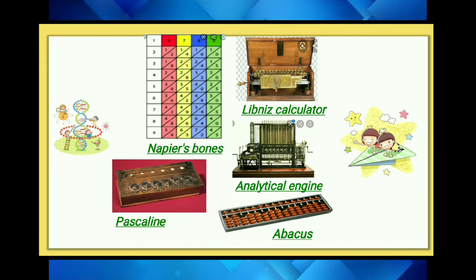As you can see the different pictures: the Abacus for doing calculations, Napier's Bones for doing multiplication, addition, and division, then the Pascaline used for different types of mathematical calculations, then the Leibniz calculator with further calculation options, and the analytical or difference engine developed by Charles Babbage, which has memory and the working principles used in our present computers.